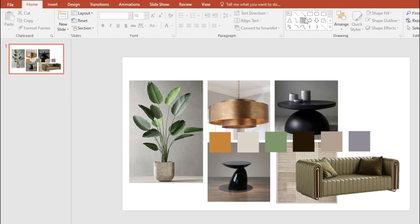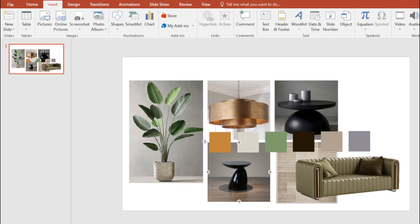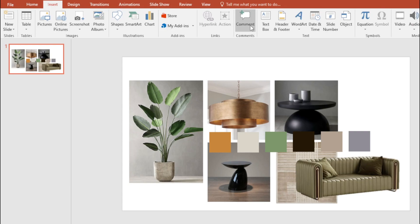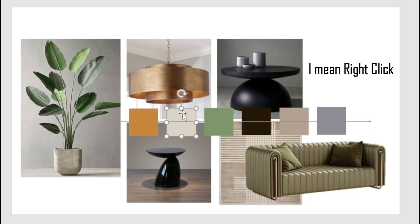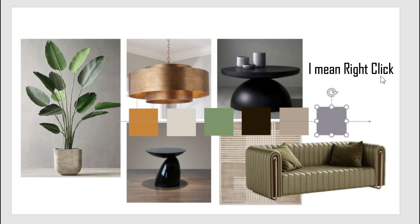I want to add something a bit artsy, so I'll go to Insert, then Shapes, and hold down Shift to draw a straight arrow line and drag it to the side. I'll click on the color swatches and use Bring to Front on each one so it looks as if the arrow is sneaking in and out between them.